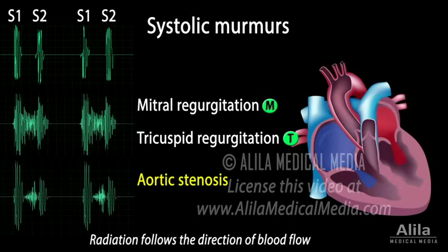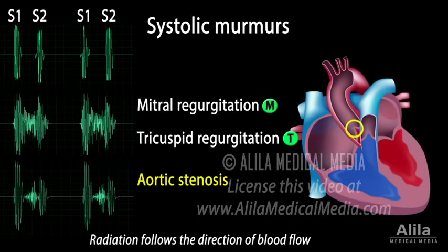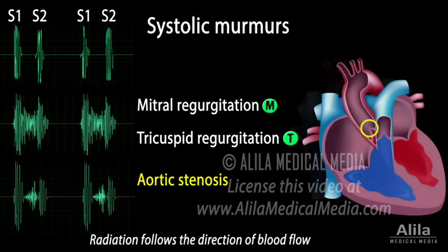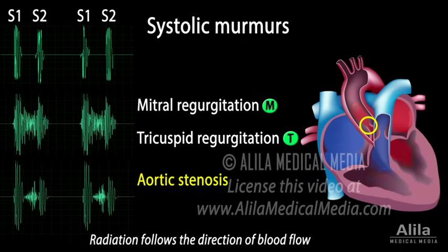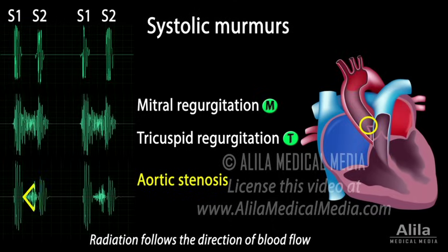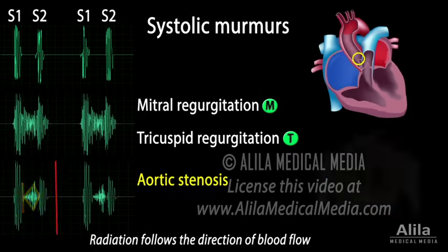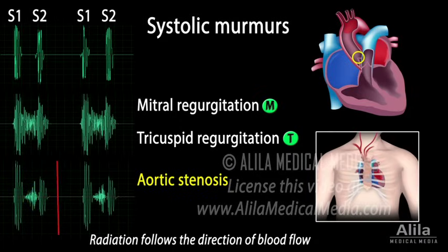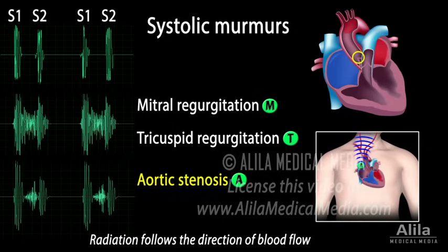Aortic valve stenosis: when the aortic valve does not open properly and blood is forced through a narrow opening, the blood flow starts small, rises to a maximum in mid-systole at the peak of ventricular contraction, then attenuates toward the end of systole. This results in a crescendo-decrescendo, or diamond-shaped murmur, which starts a short moment after S1. It is often preceded by an ejection click caused by the opening of the stenotic valve. The murmur is loudest in the aortic area, and the sound radiates to the carotid arteries in the neck, following the direction of blood flow.